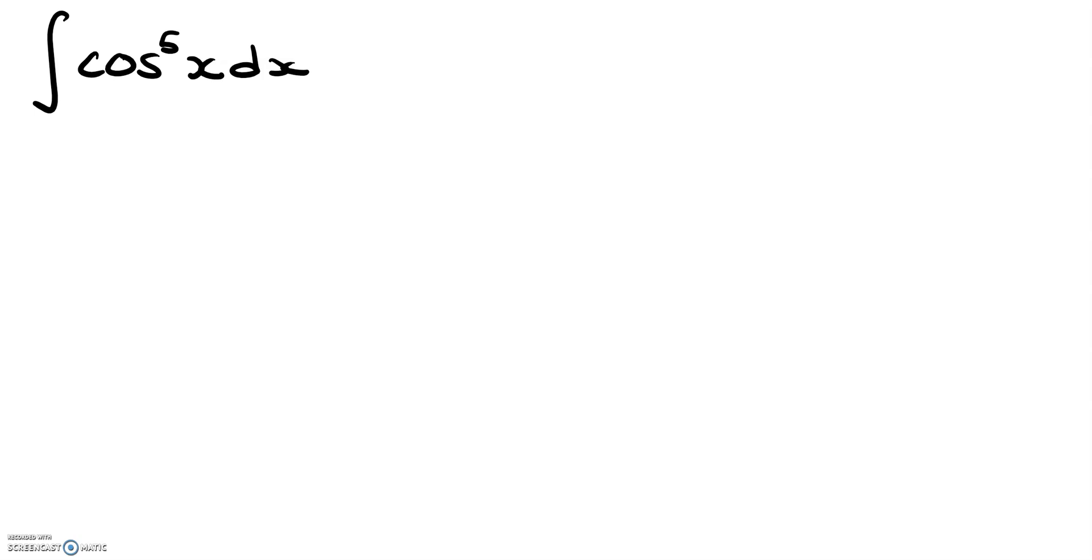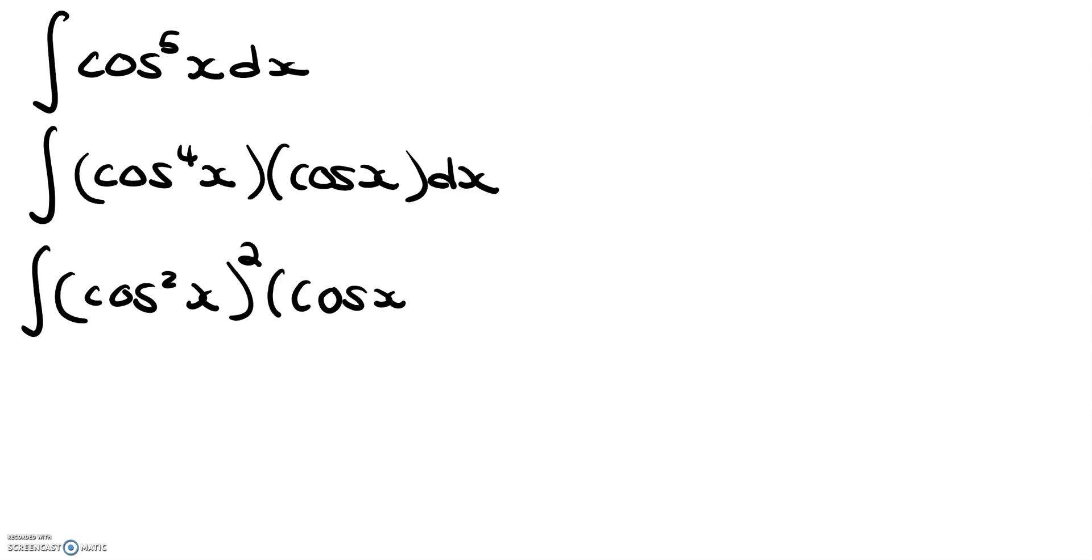So how we're going to approach this integral is we're going to split it up into cosine to the fourth x times cosine x dx. So what we want to do here now is we want to rewrite the cosine to the fourth x as cosine squared x to the power of 2 multiplied by cosine x, again dx at the end.